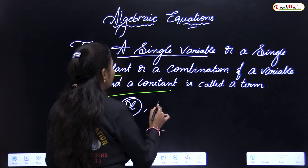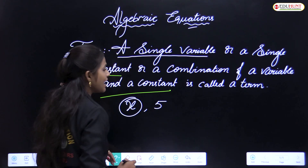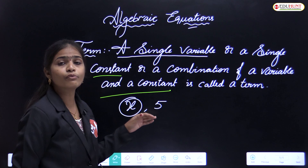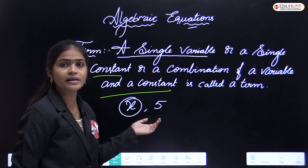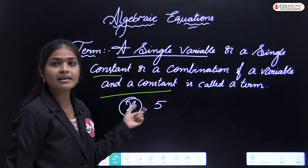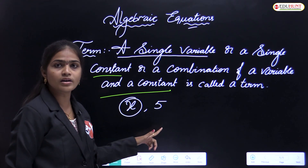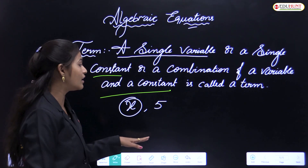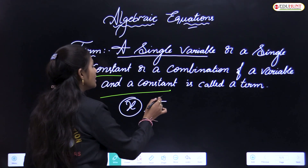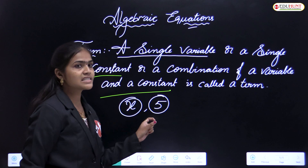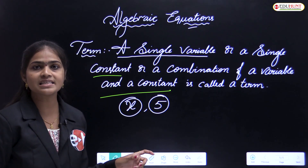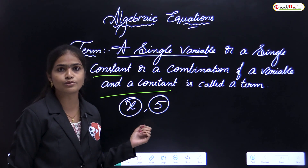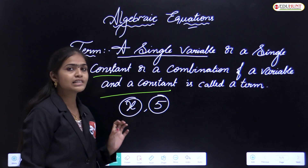Similarly, the symbol 5 — wherever we write it, we call it 5. It is a numerical value, so it is a constant. We call it a constant term. A constant term has a constant numerical value, so this is also a term.